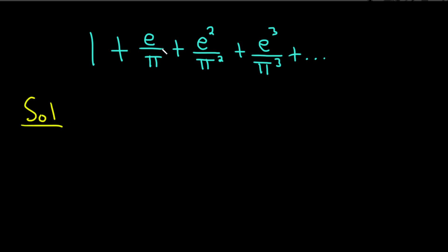And it looks like the common ratio is e over pi. So to get from 1 to e over pi, we multiply by e over pi. To get from e over pi to e squared over pi squared, we multiply by e over pi. So our r, which is called the common ratio, is e over pi.